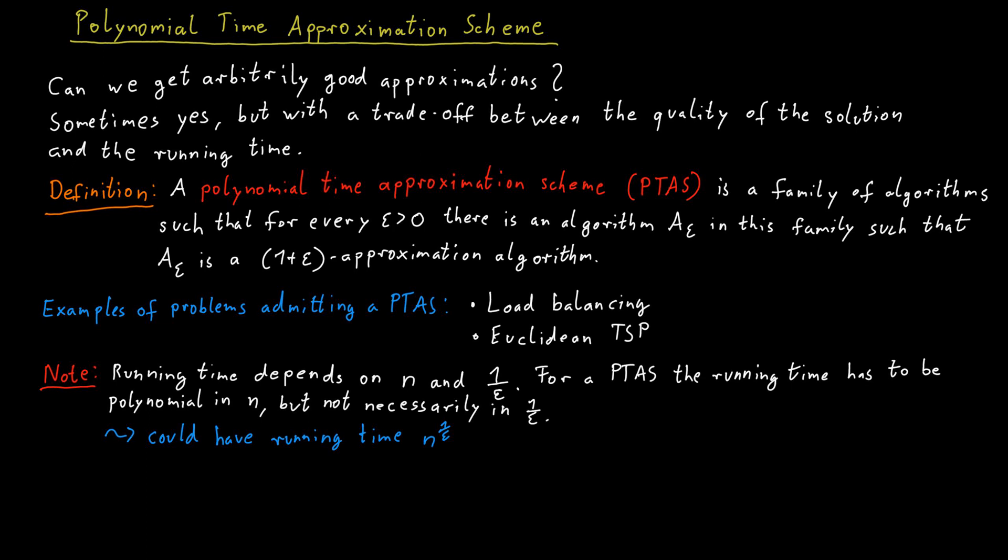If you need a result that is guaranteed to be within 1% of the optimal solution, in this case, you have to choose epsilon to be equal to 0.01. And then this gives you an algorithm that has a running time, if you just plug this in, of n to the power of 100. So that's a very large polynomial. So the running time is polynomial in n, but if epsilon is too small, it might not be very practical anymore.